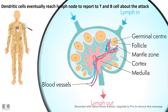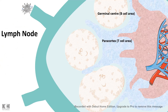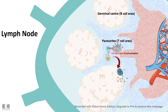The lymph node has specific subdivisions where T cells and B cells reside — like an army barracks with separate divisions. The dendritic cell, like a cop reporting to the army base, moves inside the lymph node to the paracortex where T cells reside, interacts with the T cell and activates it. The activated T cell can then activate the B cell, which differentiates into antibody-secreting plasma cells.